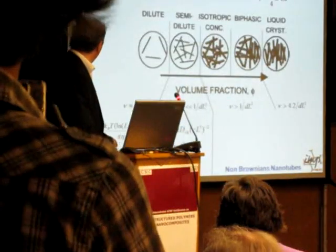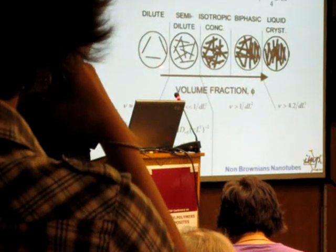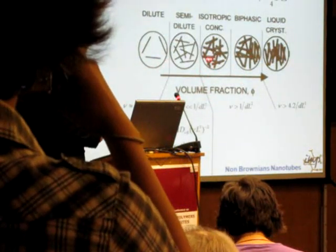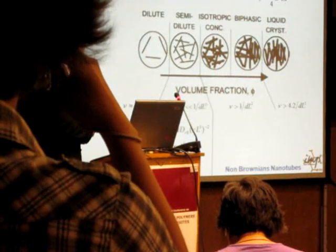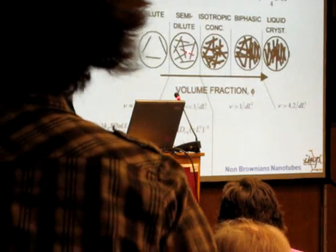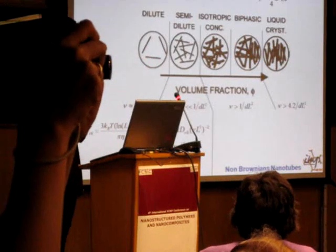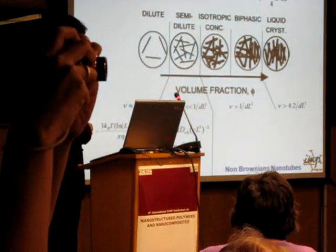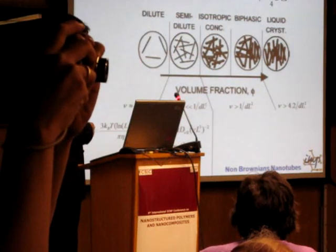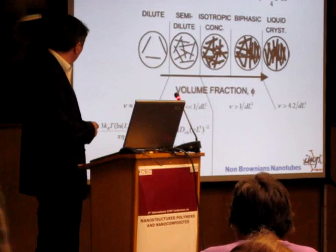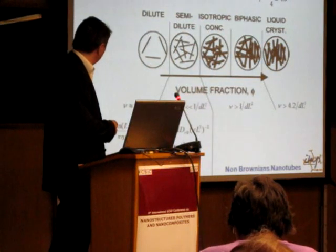A few words on the main features of the Doyle-Edward theory. So they have defined the different regimes of concentration of the suspension. The first one is the dilute regime. Now in this regime the nano rods can freely rotate without any contact and you have a Brownian motion of these nanotubes.